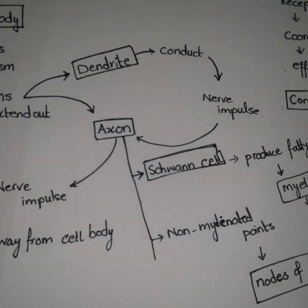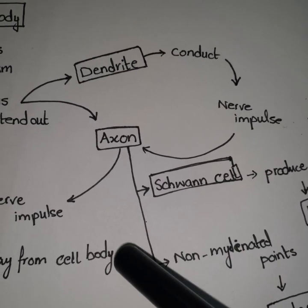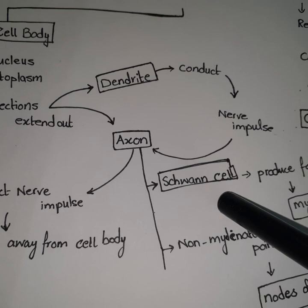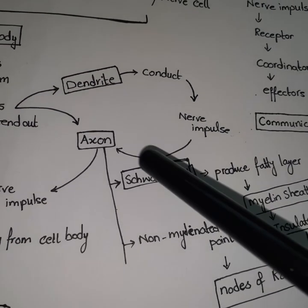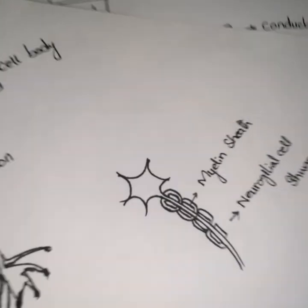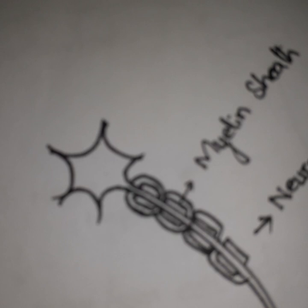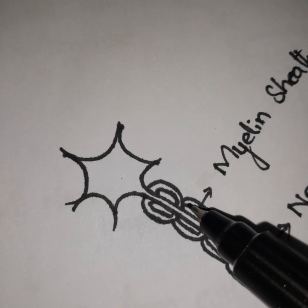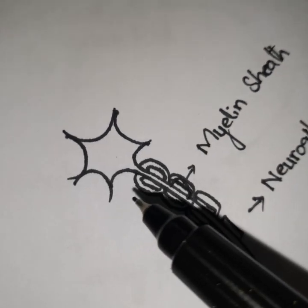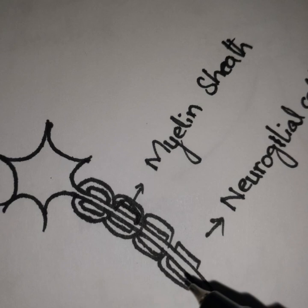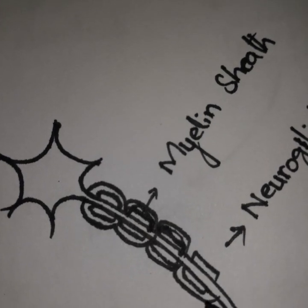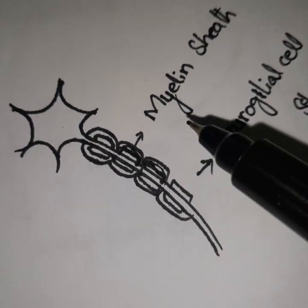The next thing we are going to discuss is the axon — what is present in the axon. The first thing is the Schwann cell, which produces a fatty layer upon the axon that we call the myelin sheath. As you can observe in the diagram, this fatty layer is produced by the Schwann cell and it covers the whole axon. We call this the myelin sheath.